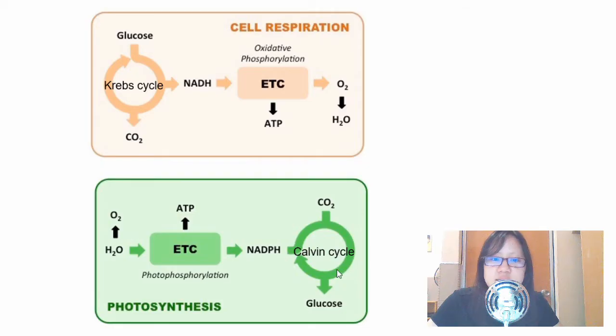ATP and NADPH is actually used in the Calvin cycle in order to form glucose and use up carbon dioxide. So what we call this is carbon fixation, taking the carbon dioxide from the environment and making it into glucose.